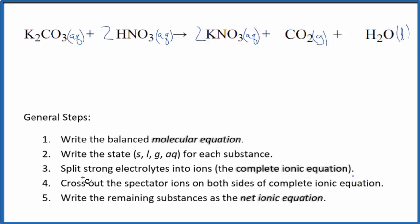Now we can split the strong electrolytes into ions for the complete ionic equation. Potassium is in group one on the periodic table with a plus one charge, and carbonate is always two minus. So we have two potassium ions aqueous, plus the carbonate ion.